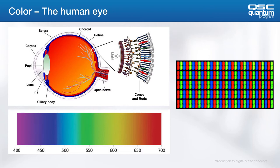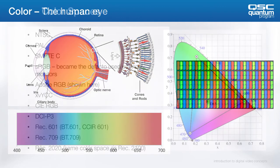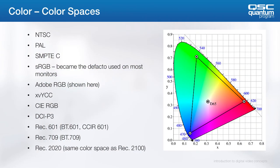Each pixel contains a subpixel, usually an RGB element, which are controlled to display a desired color and light intensity. The RGB color model can be mathematically mapped and transformed into something called a color space. Color space defines the maximum and all allowable color on a given device. The complete subset of color within a color space is defined as its color gamut.